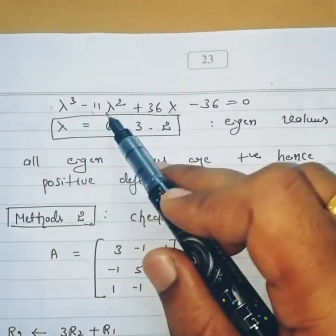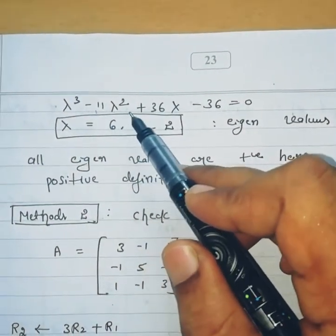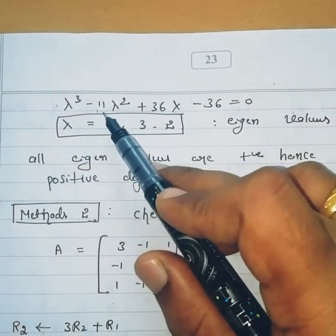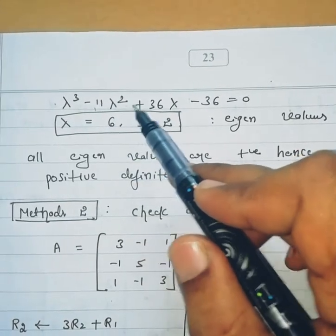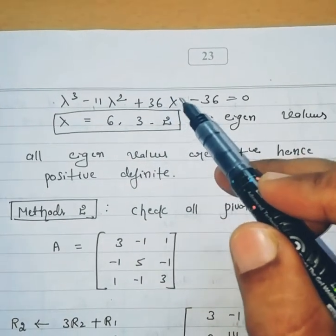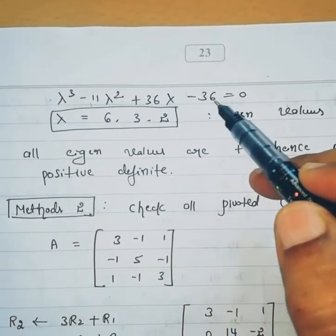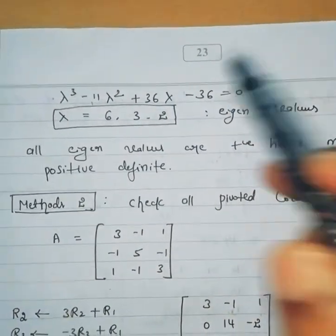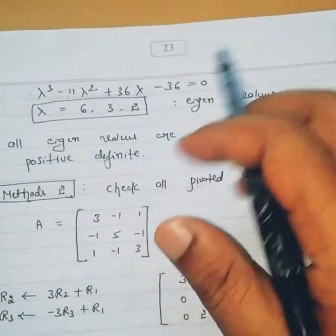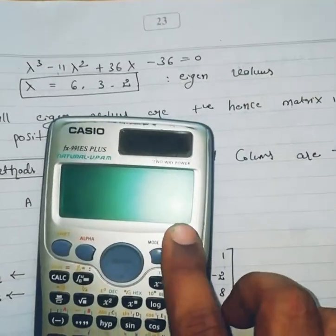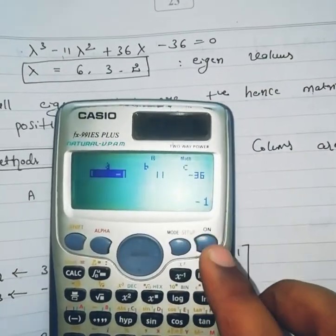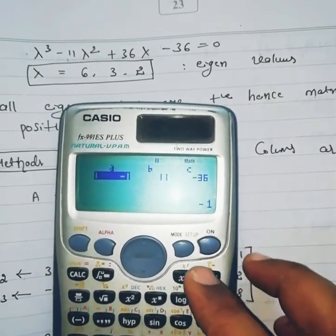The characteristic equation is: lambda cubed minus 11 lambda squared plus 36 lambda minus 36 equals zero. If you calculate this you are going to get the roots.